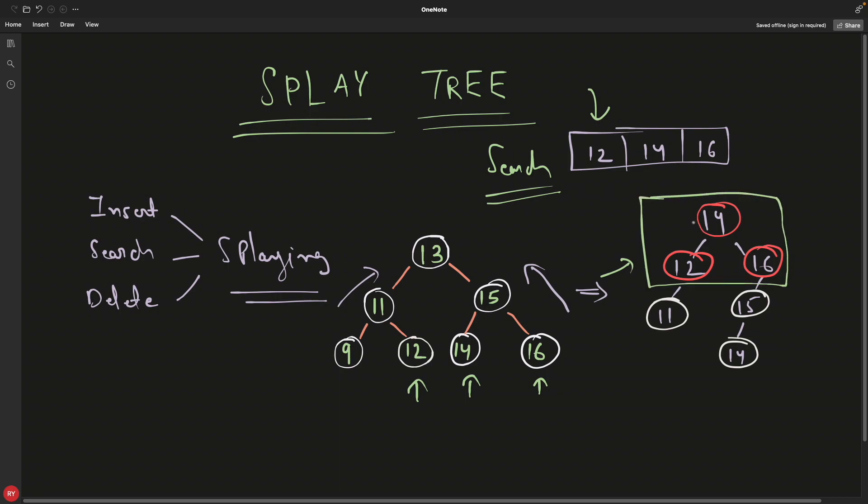You know why it is like this? So that if I want to search them again, let's say if I want to search 16 again, I don't have to go from here to here and here to here. Originally I would have found it with three comparisons. But here if you see, I'll have to compare it only two times, like one here and second here.